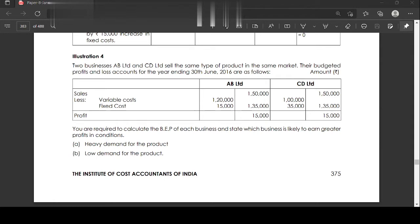Total cost. Next, profit. For AB Limited profit $15,000, CD Limited profit $15,000.